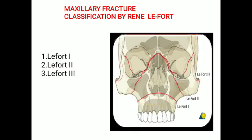Maxillary fractures were classified by René LeFort in 1901. He classified them as suprazygomatic fractures or subzygomatic fractures and gave three lines: LeFort 1, LeFort 2, and LeFort 3. This is a diagrammatic presentation of all three lines — LeFort 1 fracture, LeFort 2 fracture, and LeFort 3 fracture.